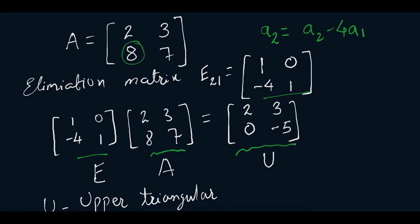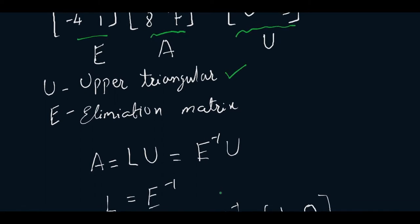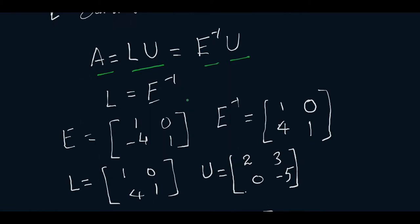This transforms A to U, where U is our upper triangular matrix. In the same way, E is our elimination matrix, so we can write A in the form of A equals E inverse times U. Here L is the inverse of E, so if E is this matrix, the E inverse will equal L, and LU will equal A.